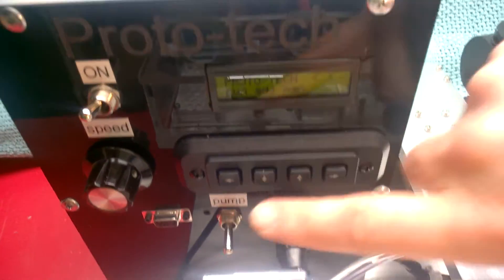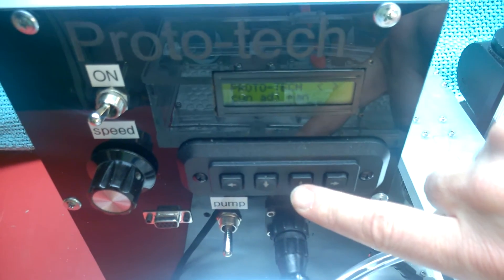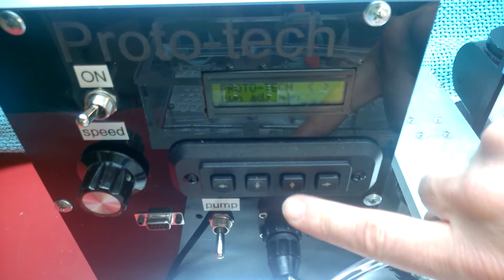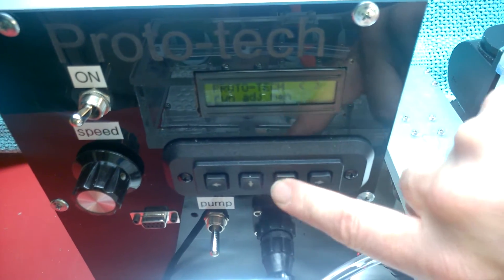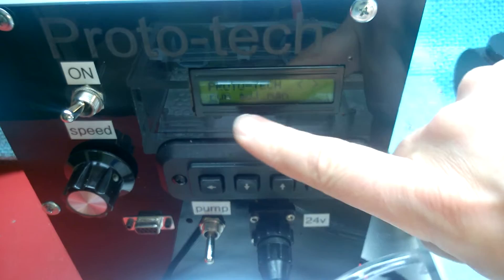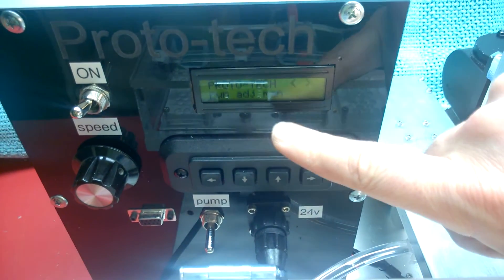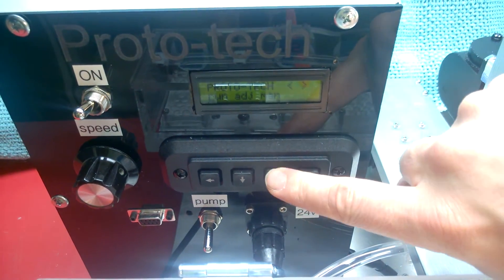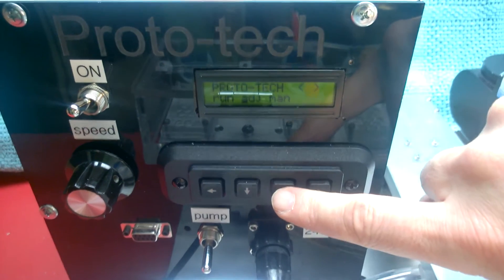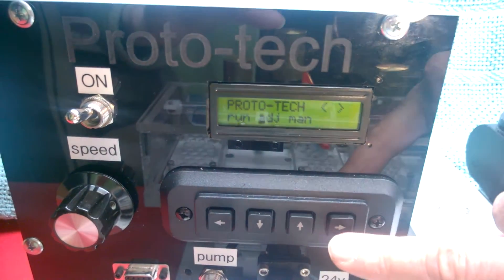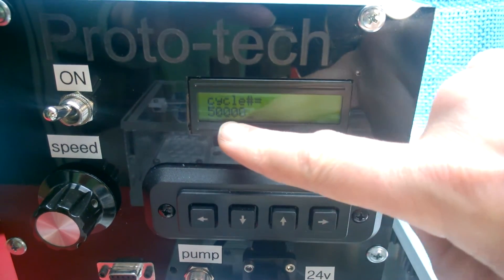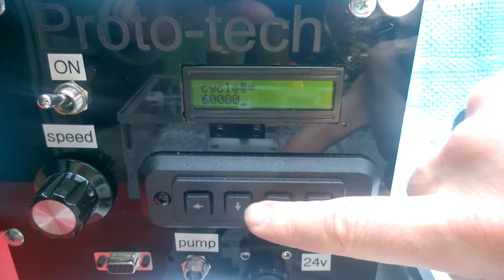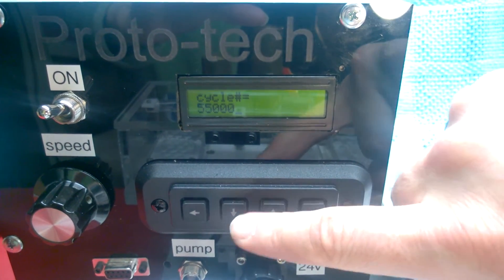We're going to start by hitting the, you see as you, on the keypad, as you hit these up and down arrows, it highlights these different elements: run, adjust, manual. So let's highlight adjust. We can go through that menu. You can adjust the number of cycles. It's going to go to an increments of 5,000.